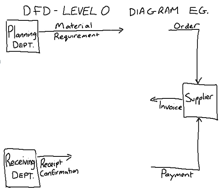In this presentation we're going to be looking at a Level 0 diagram example. We already have our external entities — planning department, receiving department, and supplier — copied over from our context diagram, along with the five data flows we also identified there. In the Level 0 diagram we want to see what actually happens inside the main process, the purchasing system. All data flows and external entities must be copied down exactly the same; location is not an issue — it is quantity and labeling.